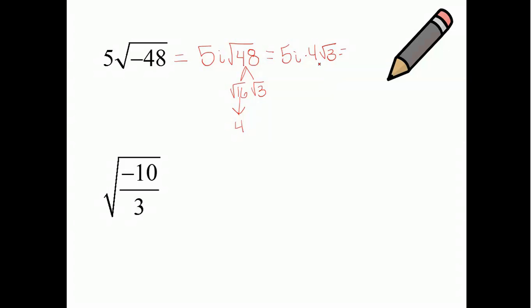So, I can rewrite this as 5i times 4 square roots of 3. Let's simplify this down even further. Because this is multiplied. 5 times 4, well, that's just 20. So, I have 20i square roots of 3.